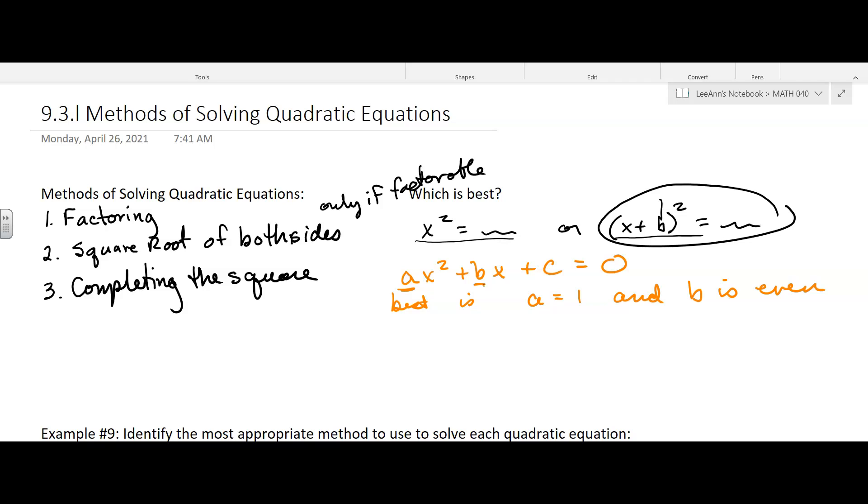Now, you can always do completing the square. It's just the amount of fraction work you want to deal with. So usually I only complete the square if I'm given a choice. If a equals one and b is an even number, then I don't get a lot of fractions and the simplifying is easier.